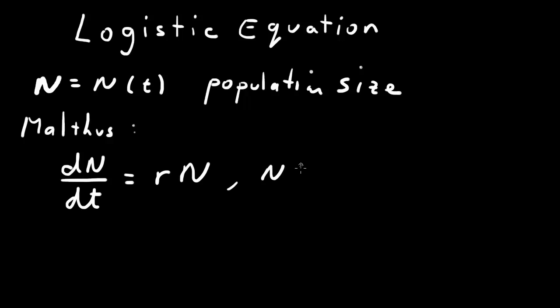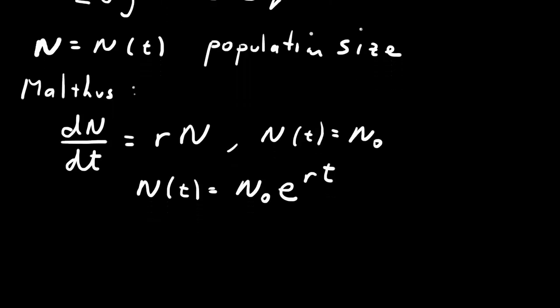If the initial population size was given as N₀, then the solution is an exponential function. We end up with N(t) equals N₀ times e to the rt, so exponential growth in the population.